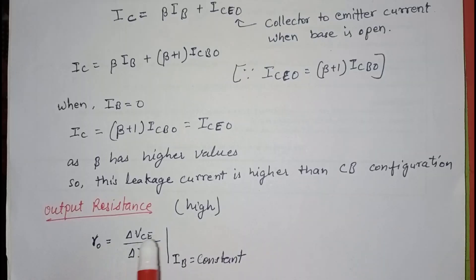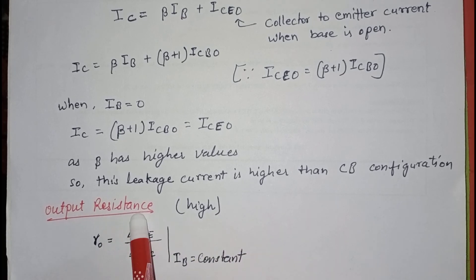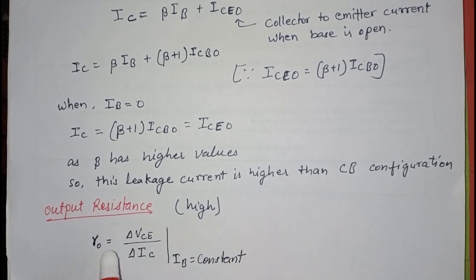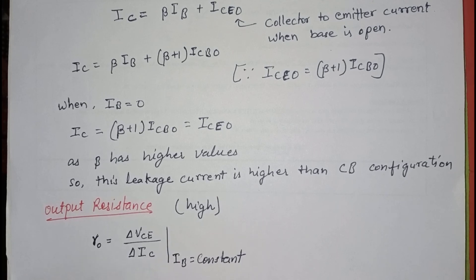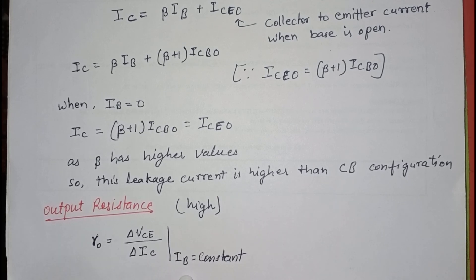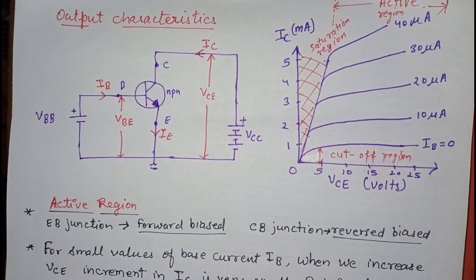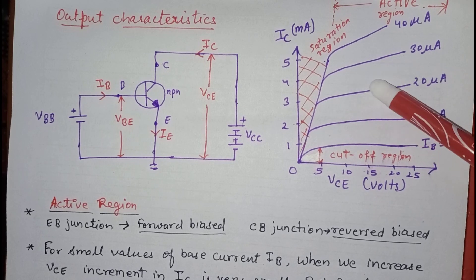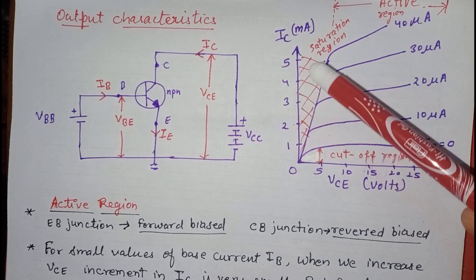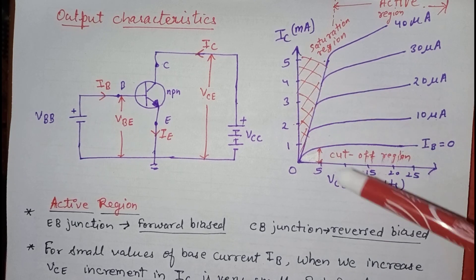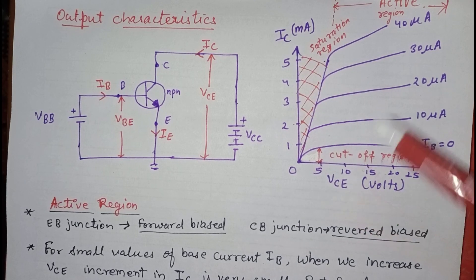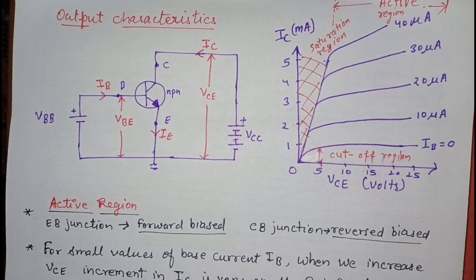The output resistance of the common emitter configuration is high. It is given by the change in VCE divided by the change in IC at a constant value of IB. We can find the output resistance from the curves by taking two points on any one curve, drawing perpendiculars to both axes, and calculating the ratio of ΔVCE to ΔIC.